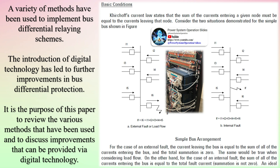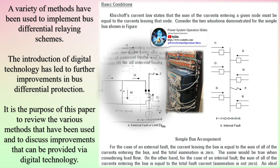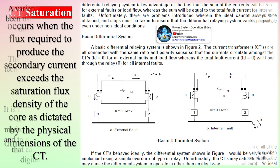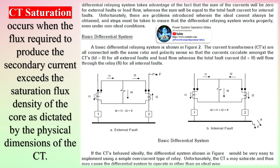This simplicity comes in exchange for less service reliability. Features that increase the service reliability of a bus also tend to necessitate a more complex bus protection scheme. As bus protection complexity increases, more sophisticated relaying is required and additional station information such as disconnect status must be incorporated into the protection scheme.